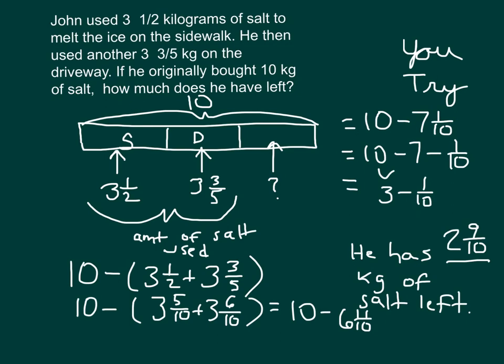Thinking about whether our answer is reasonable: two and nine-tenths is very close to three. This amount was close to three, three and a half is already three and a half, and three and three-fifths is also close to three and a half. So three and a half plus three and a half is seven, plus three is ten — that's the full amount. So these two numbers would have to be one-tenth away from each other. Our answer is reasonable.